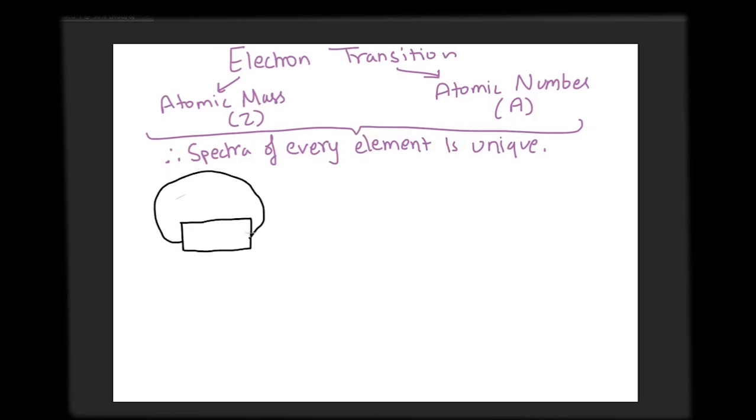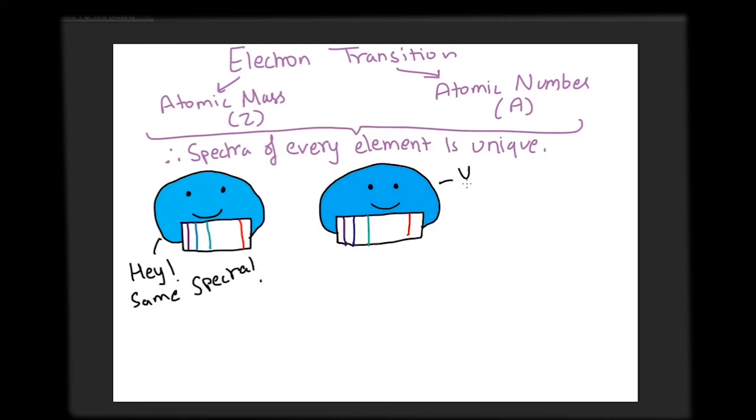Hence, no other element will release the exact sequence of spectral lines or emission spectrum as that of any other element. Hence, the emission spectrum of elements actually work as their fingerprints. Looking at just the emission spectrum of a gas, scientists can identify what gas is it.